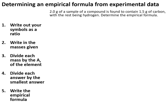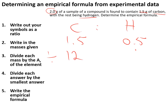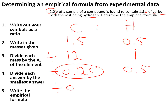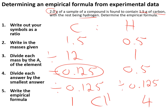To determine an empirical formula from experimental data, write down the symbols as a ratio. For carbon and hydrogen: carbon has 1.5 grams and, given a total mass of 2 grams, hydrogen has 0.5 grams. Divide each by the relative atomic mass — carbon by 12 gives 0.125, hydrogen by 1 gives 0.5. Then divide both by the smallest value (0.125), giving 1 for carbon and 4 for hydrogen. The empirical formula is therefore CH₄.